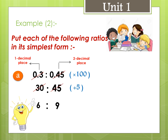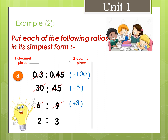Example number 2, letter a: 6 to 9. Since 6 and 9 are both divisible by 3, we divide: 6 divided by 3 equals 2, and 9 divided by 3 equals 3. The ratio is 2 to 3.